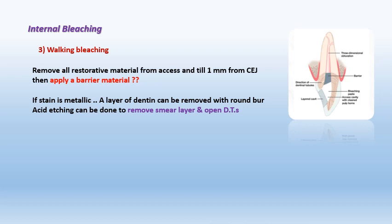Leakage through the dentinal tubules causes inflammation of the periodontal ligament with subsequent external cervical root resorption. Also, any stain in the tooth, especially from metallic restorations such as amalgam — which releases metallic ions that highly stain the tooth — must be addressed. I may try to remove it with a small round burr.